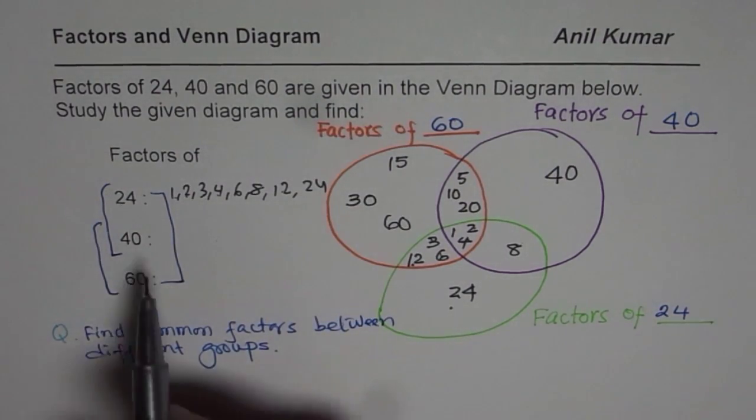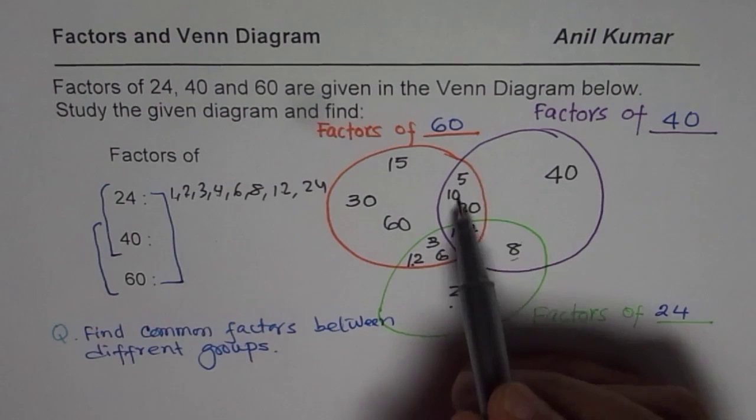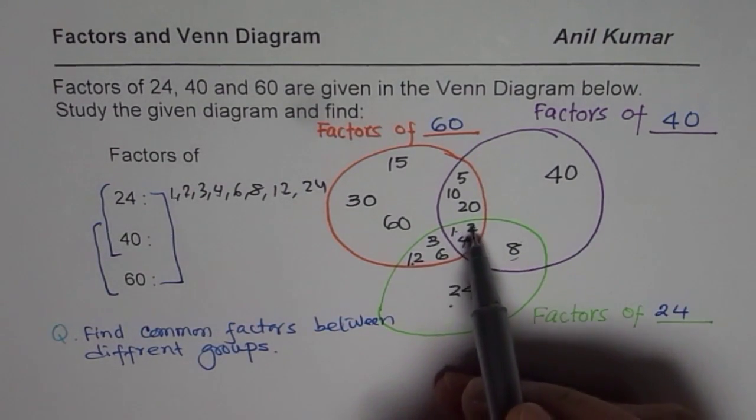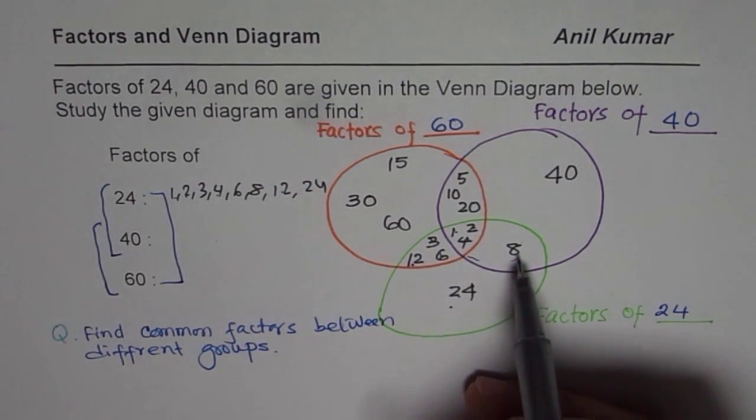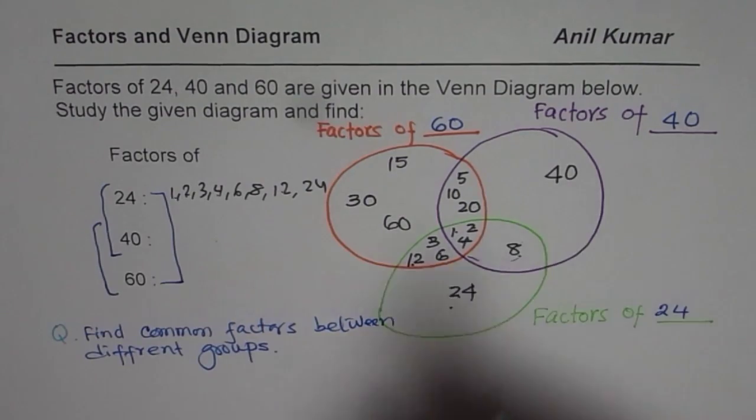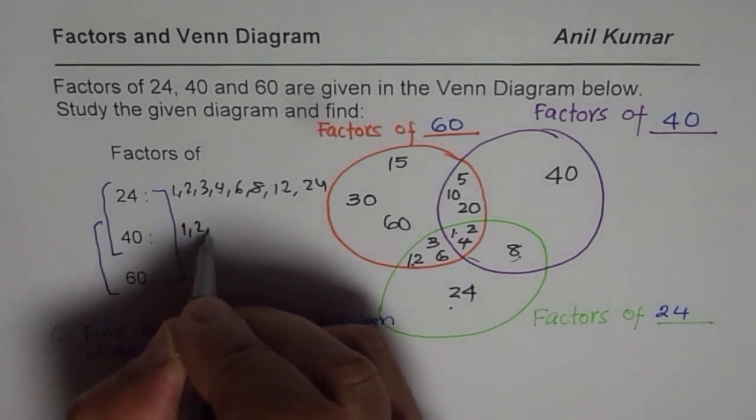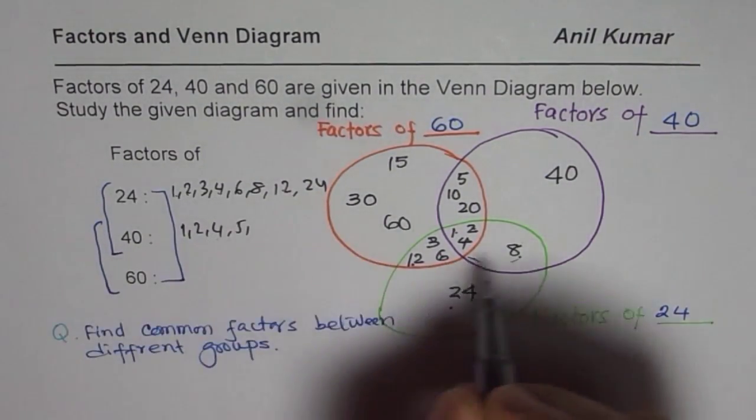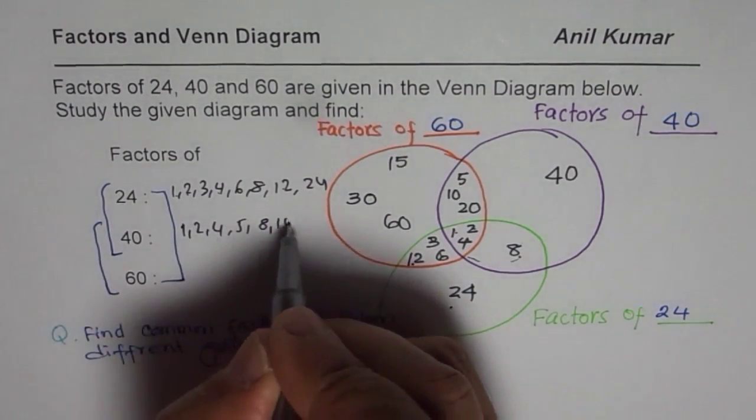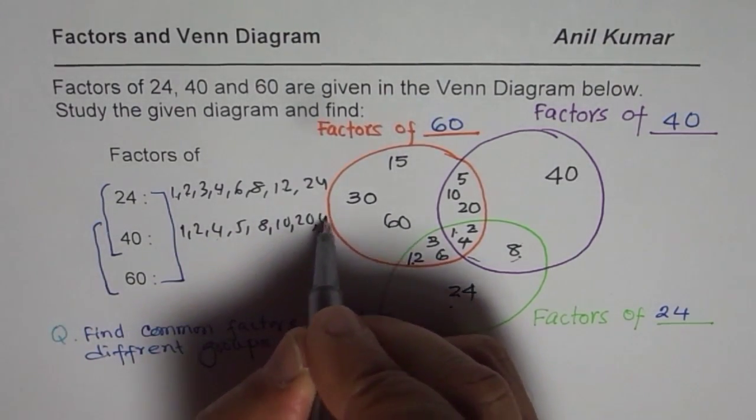Now, let us see factors of 40. These are all the factors of 40: 1, 2, 4, 5, 8, 10, 20, and 40. Let us write down. 1, 2, 4, 5, 8, 10, 20, and 40.